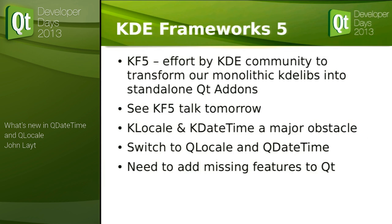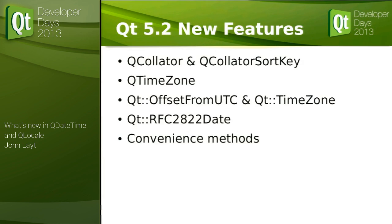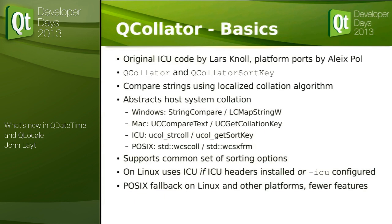As part of our KDE Frameworks 5 effort, we're changing our monolithic KDE libs into nice neat standalone libraries. A big obstacle for us was KLocale and KDateTime — we want to get rid of that dependency and switch to using the Qt classes instead. However, that meant we needed to add a whole bunch of missing features to Qt. For 5.2, we've added collation, time zone support, new extra features in QDateTime, and a whole bunch of convenience methods.